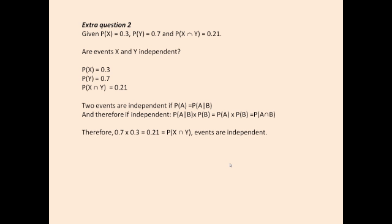It's always nice to go through and think about what information you've got. We've got both the marginal probability — the probability of X as well as the probability of Y by themselves — and then we've got the joint probability, the probability of X and Y. To answer whether X and Y are independent, we have to think about our rule, and then what information we've got and any extra information we need to find.